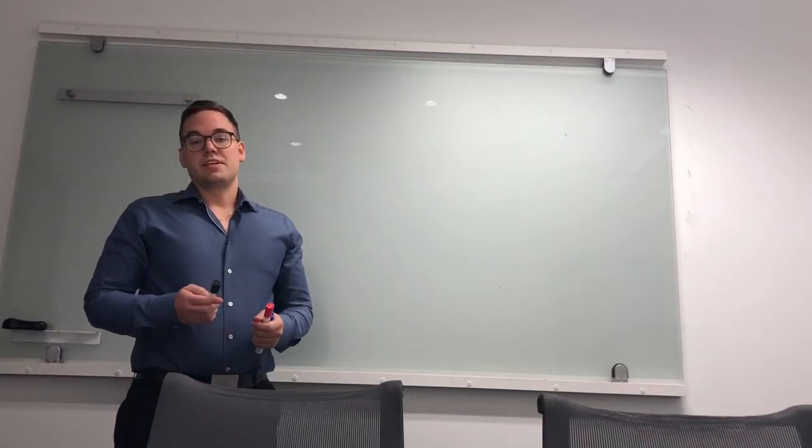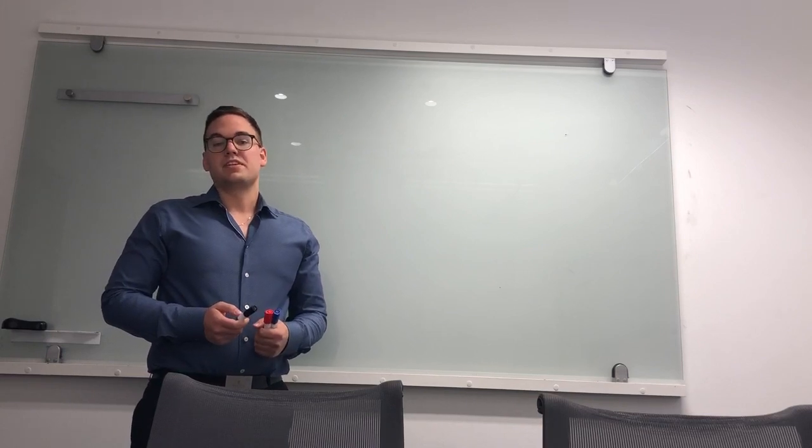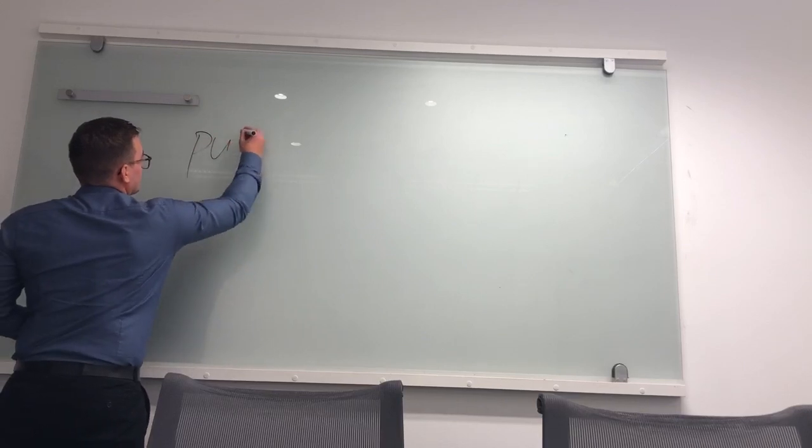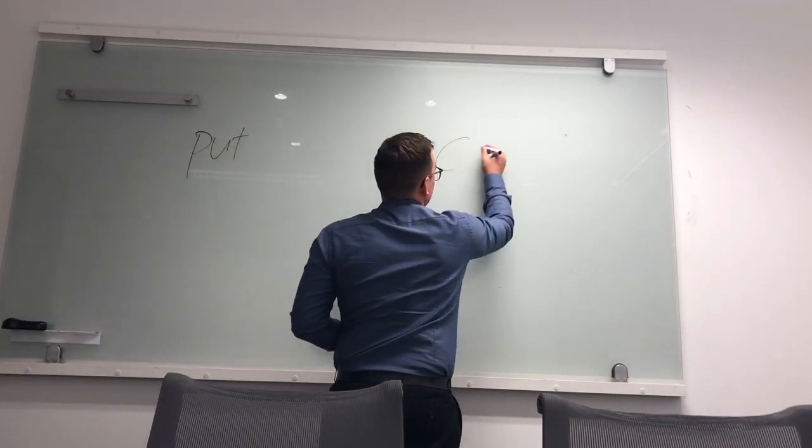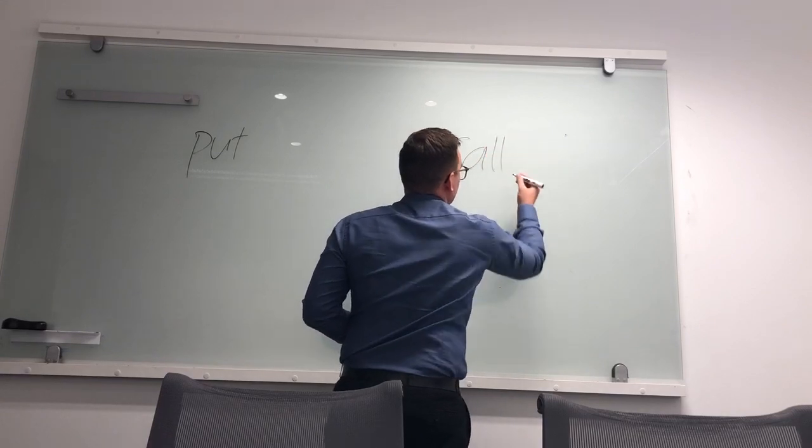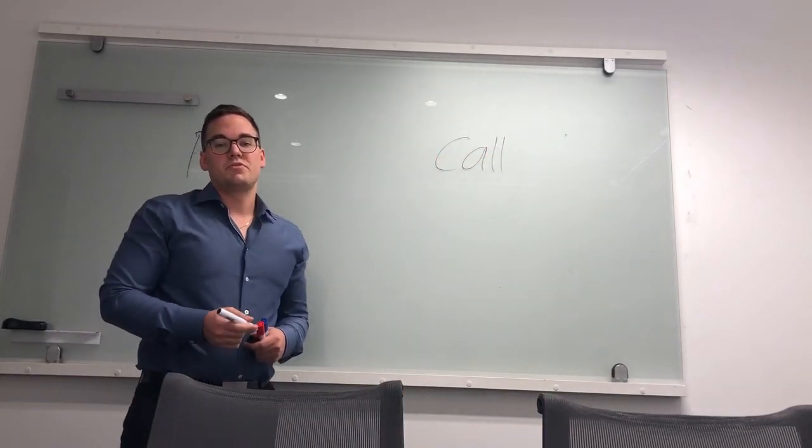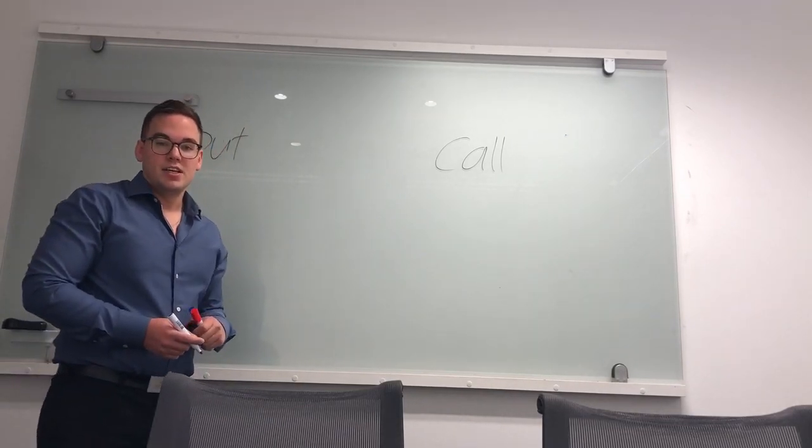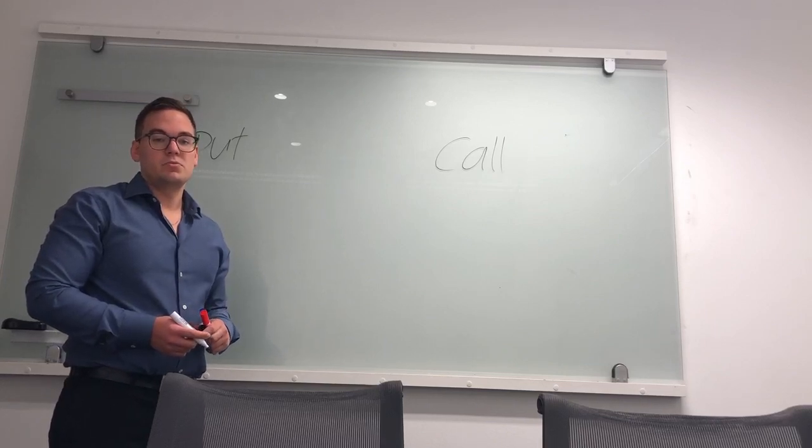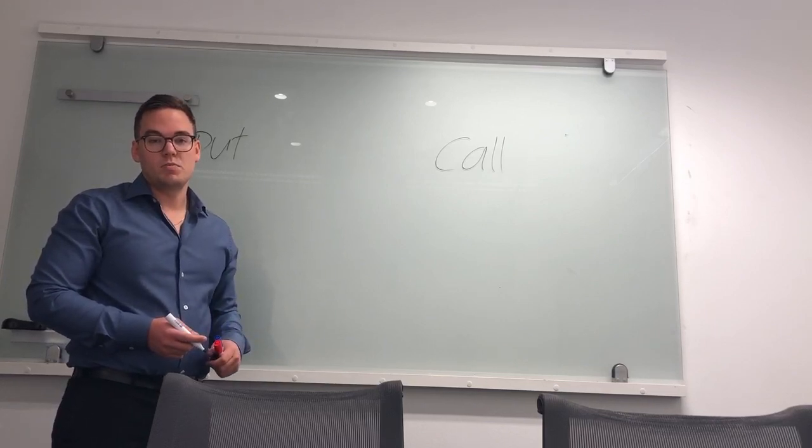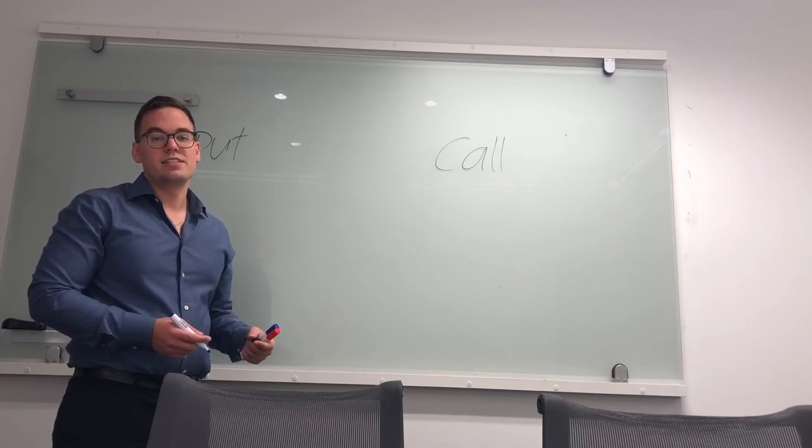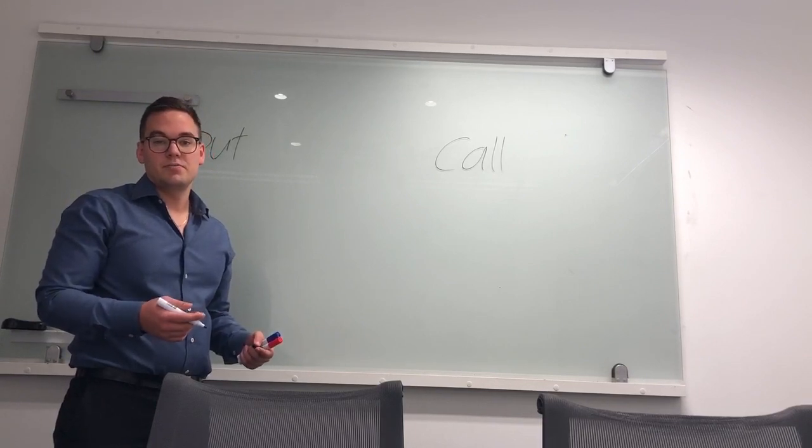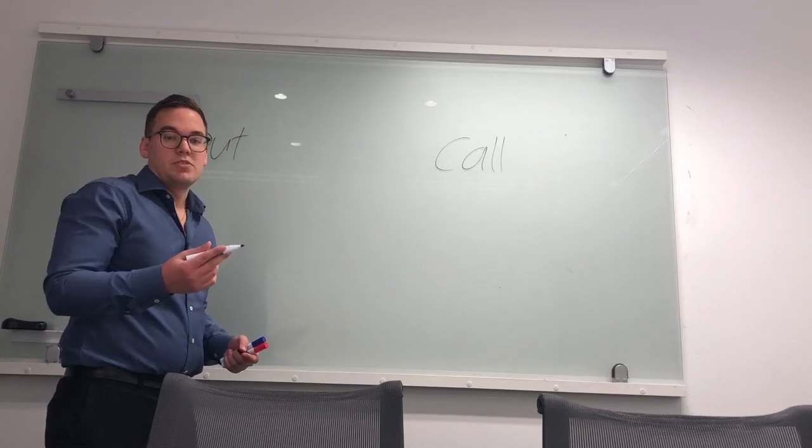Hello everybody, today we're going to simply explain options, more specifically put and call options and how they work. A call option is more commonly referred to as a buy option and a put option is more commonly referred to as a sell option. To simply explain this, I'm going to go over a quick example of how it works and the underlying basics. An option is derived from an underlying asset, could be anything.